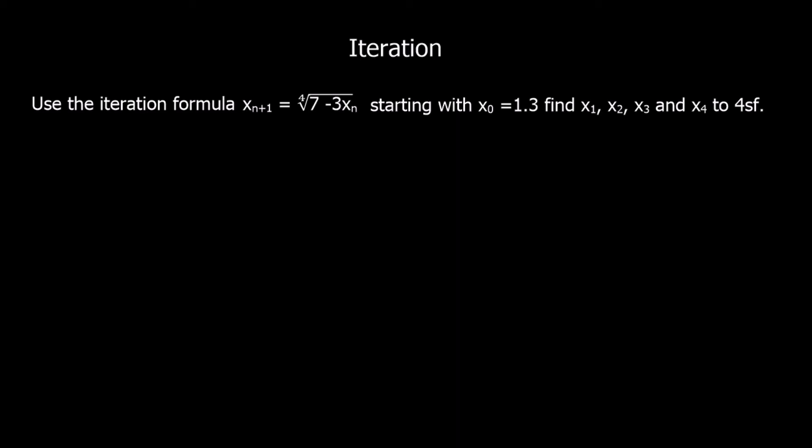Okay, here's another question. We've been given the iteration formula, and we're going to start with x0 as 1.3. And we're going to find x1, x2, x3, and x4 to 4 significant figures.